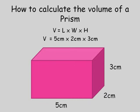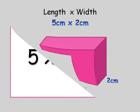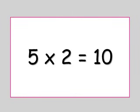Let's have a go. The first thing we need to do is times the length, 5 centimetres, by the width, 2 centimetres. So, we need to times 5 times 2. 5 times 2 equals 10. So, 10 is the length times the width.